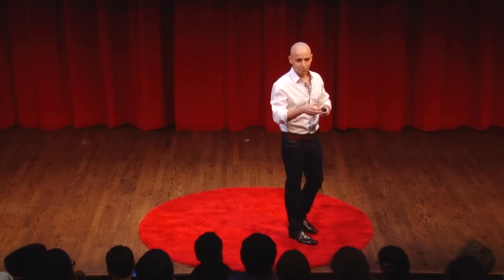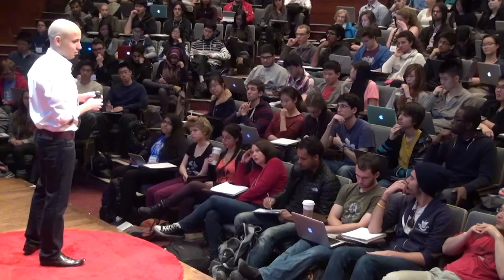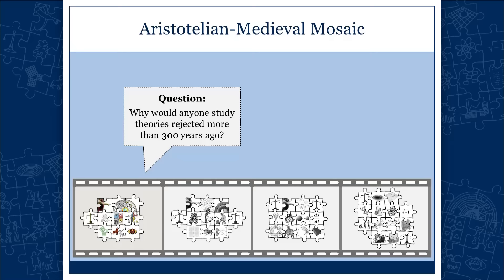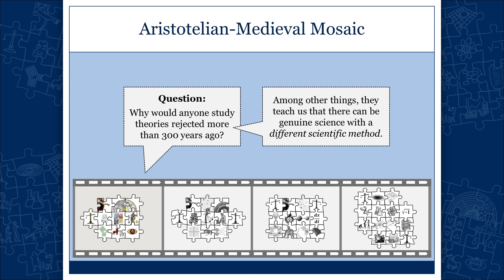I'm not asking you to accept the actual content of the science of the time — there is a reason those theories were abandoned 300 years ago. But what it teaches us is that science changes, and not only scientific theories but also scientific methods. If you ask me why it's important to study the Aristotelian medieval science, the most important reason is that it shows you can have a genuine science with a different scientific method. We believe it's science because it obeyed the four laws of scientific change.